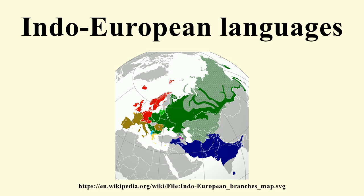The Indo-European family includes most major current languages of Europe and parts of Western, Central and South Asia. It was also predominant in ancient Anatolia, the ancient Haram Basin, and most of Central Asia until the invasion and migrations of Turkic speakers, especially during the Mongol-Turkic conquest in the 13th century, with written attestations appearing since the Bronze Age in the form of the Anatolian languages and Mycenaean Greek.